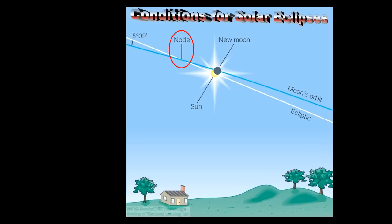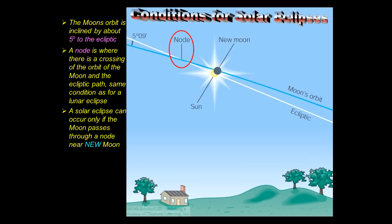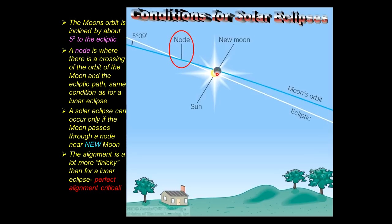The moon's orbit is inclined by about five degrees to the ecliptic, and there's a node where the moon needs to be at the crossing of these planes. It must be a new moon because it's trying to block the Sun. Because the Sun and the moon are essentially the same apparent size, alignment needs to be almost exactly on the node - the alignment is much more critical than for a lunar eclipse. Even a little ways off the node, you only get a partial solar eclipse.